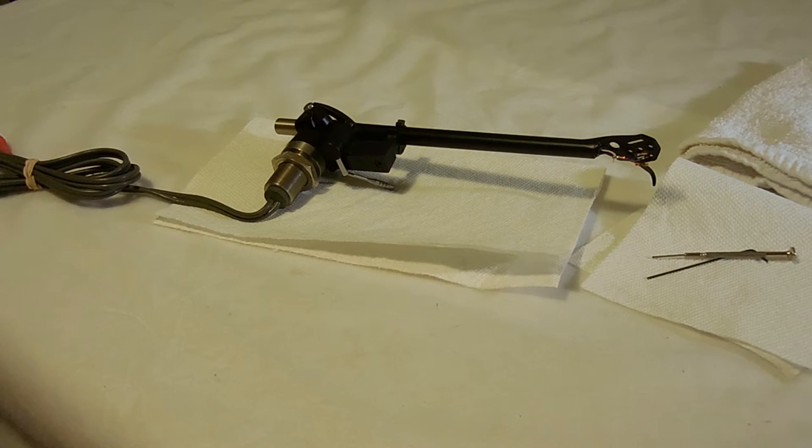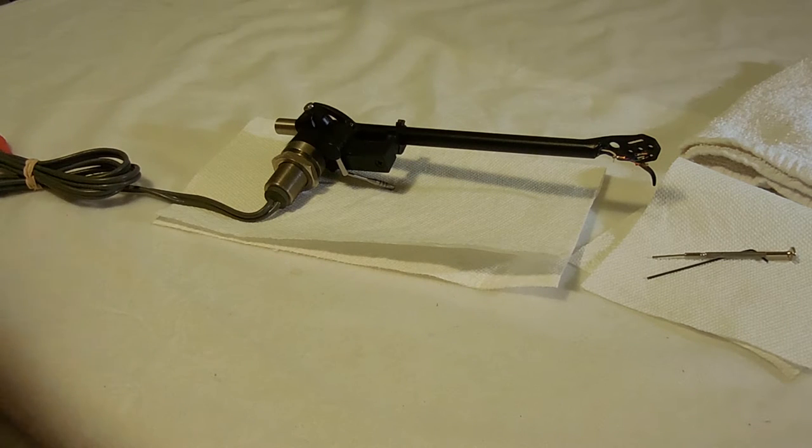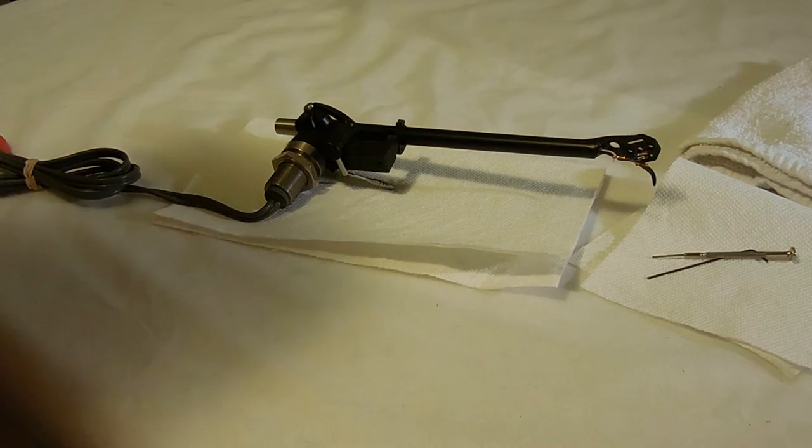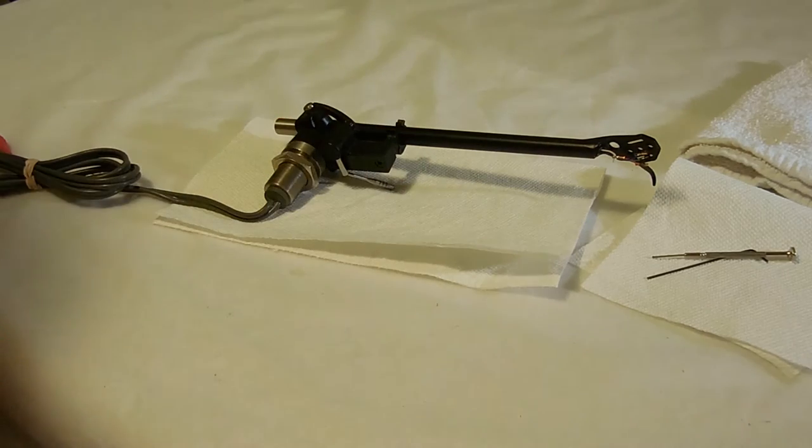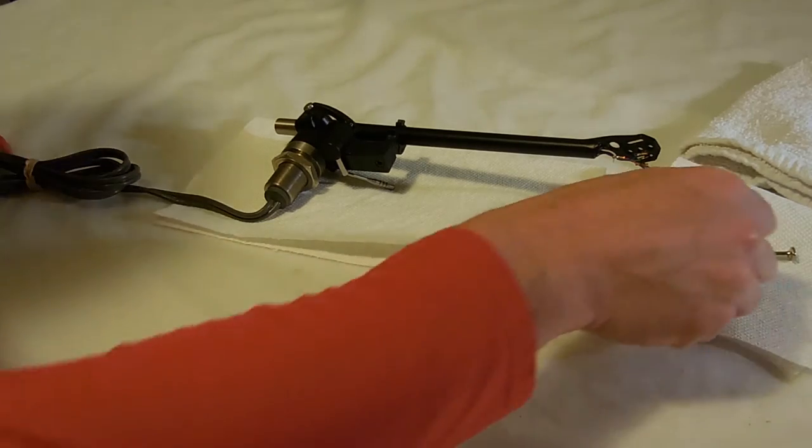Hi everyone, it's Dave at Vinyl Nirvana and today I'm going to be going over how to remove the cueing mechanism in an RB series tone arm. This is an RB300. I'm not 100% sure if this is the procedure on all of the Rega arms and all of the newer ones, but it'll work with an RB300.